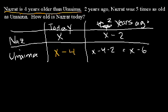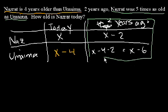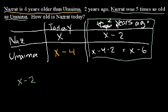Now we have one final piece of information: two years ago Nazareth was five times as old as Umama. Two years ago, Nazareth was x minus two, and Umama two years ago was x minus six. So Nazareth two years ago — x minus two — equals five times Umama two years ago, which is five times (x minus six).